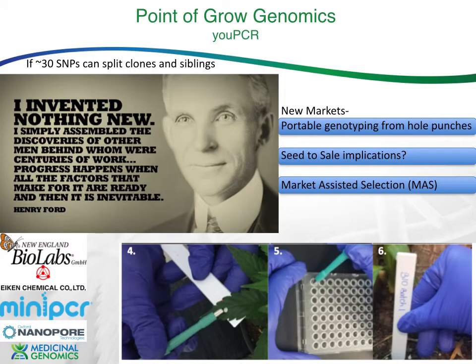We can readily discriminate with 29 SNPs between clones and siblings and pinpoint anything on the tree. When you stop and ask — this isn't a lot of SNPs — we could probably do this point of grow. We may not need a large sequencer; we can use one of the new USB sequencers, or possibly something even simpler and cheaper — colorimetric portable qPCR. This project required a lot of collaboration with no 'not-invented-here' syndrome: New England Biolabs, Iken Chemical, Amplius, Mini-PCR, and some Oxford Nanopore mixed in.